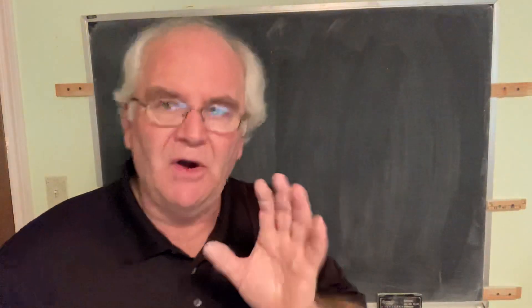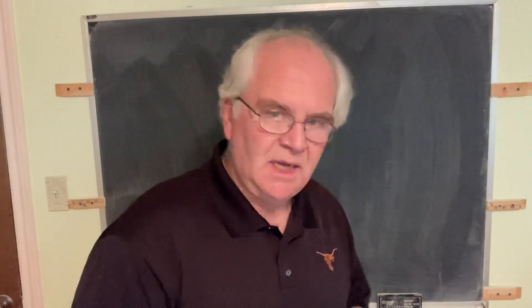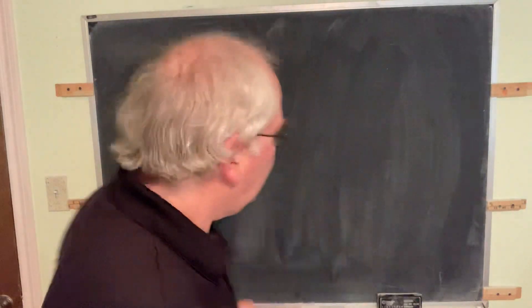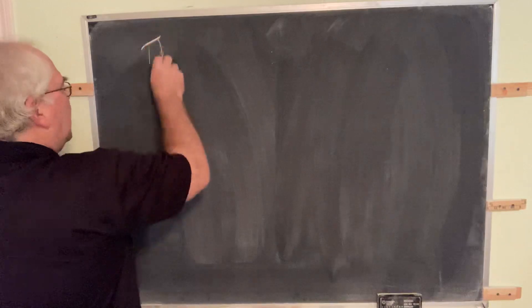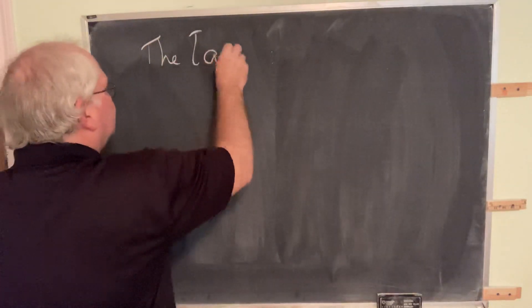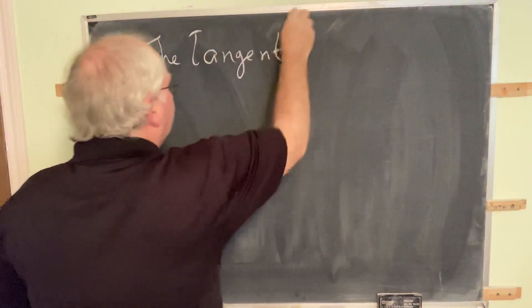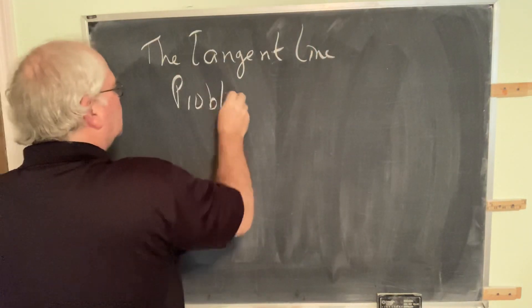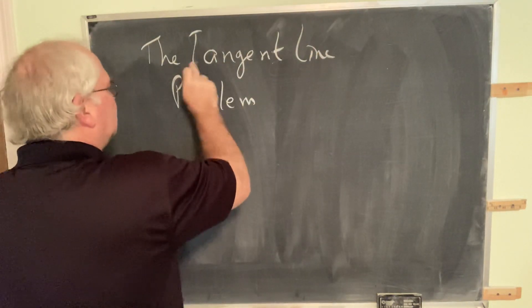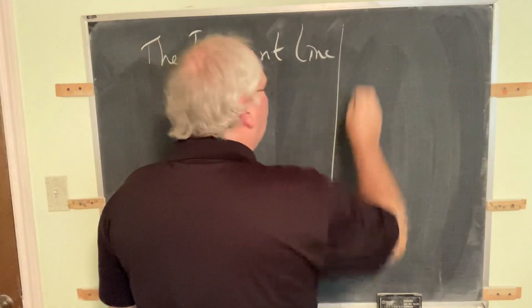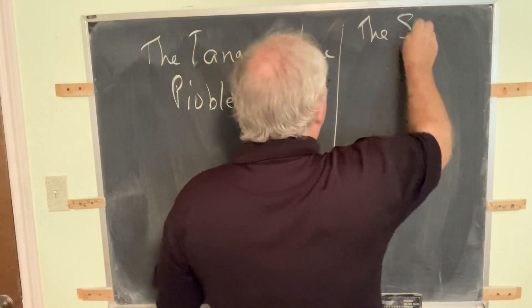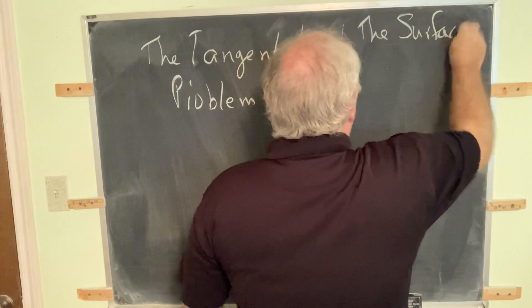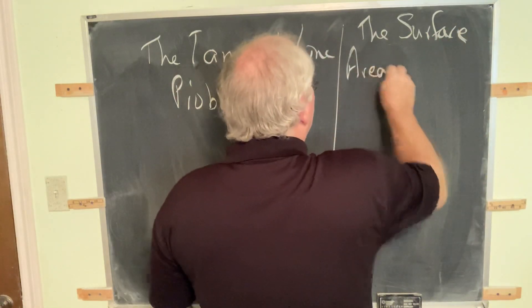So it turns out there are two basic problems in elementary calculus. One is called the tangent line problem. The other is called the surface area problem.